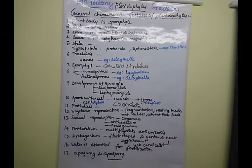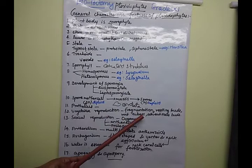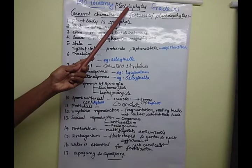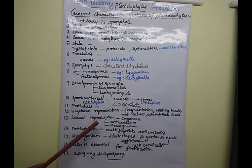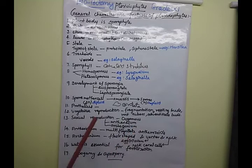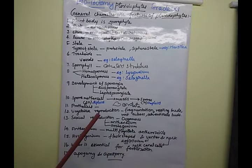Different types of reproduction take place in Pteridophyte members. The sexual reproduction is oogamous type, producing two types of sex organs: the male organ is antheridium and the female organ is archegonium. These two sex organs are produced from the prothalus region.